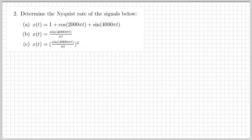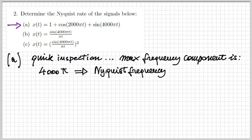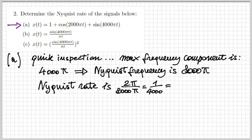The second exercise is also about determining the Nyquist rate for certain signals, so we need to determine the correct sampling rate for these signals such that they can be reconstructed. Starting with part a, from a quick inspection we see that this signal has a maximum frequency component of 4000π. Therefore the Nyquist frequency is twice that — 8000π — and the maximum sampling period is 2π over 8000π, giving 0.25 milliseconds. Let's verify this result now.